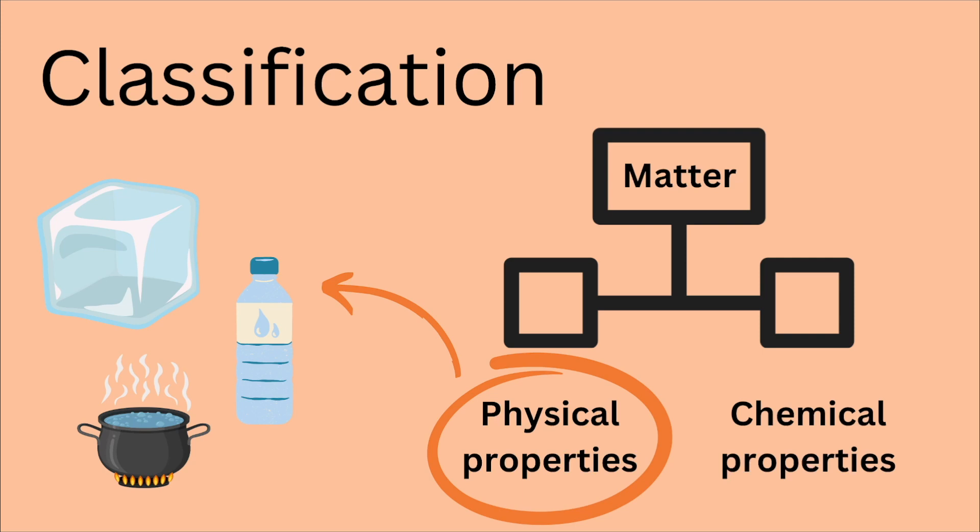In this particular chapter, we will be focusing on the classification of matter based on physical properties, meaning the state at which it is in. What do I mean by state? If you consider ice cube, it is a solid. If you consider a bottle of water, it is liquid. And if you pour water in a vessel and start boiling it, you will see water vapors coming out, which is gas. Matter can exist in these three states.